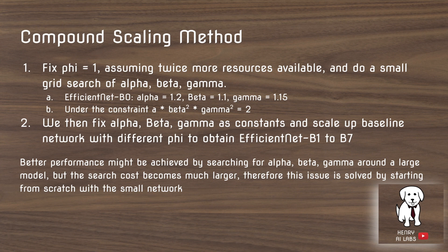The compound scaling network starts with a small base network, and then they grid search for parameters constrained by alpha times beta squared times gamma squared equals 2. What they find is alpha to be 1.2, beta to be 1.1, and gamma to be 1.15. This is how they increase the network at each iteration — scaling it up by these factors on the dimensions of width, depth, and input image resolution.